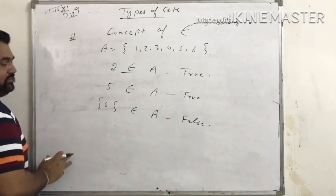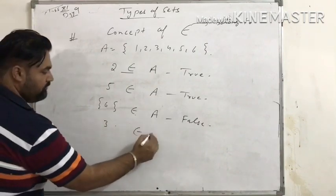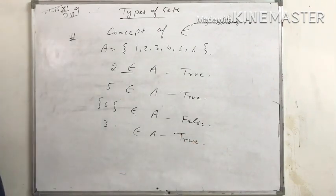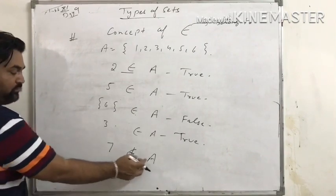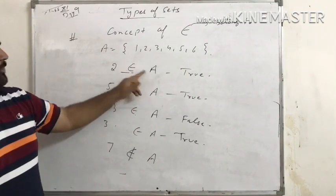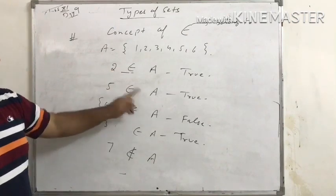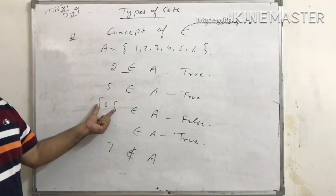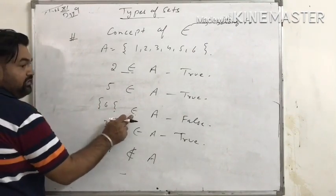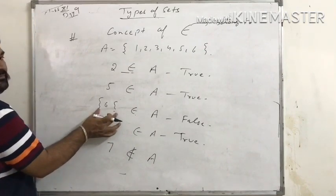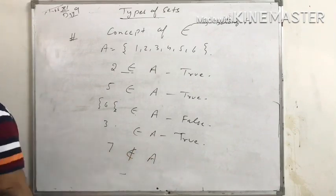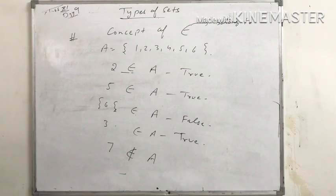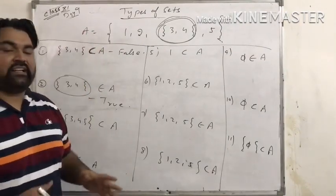Whenever there is a sign of 'belongs to' (∈), we never use curly braces. So writing a set with curly braces after ∈ is false, because 'belongs to' means an element — an element only, not a set. For example, 3 ∈ A is true. But 7 ∉ A because 7 is not present in set A. So remember: with belongs to, we need only the element, not the set in curly braces.